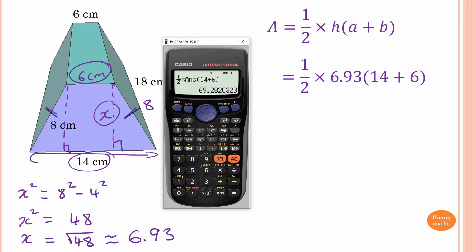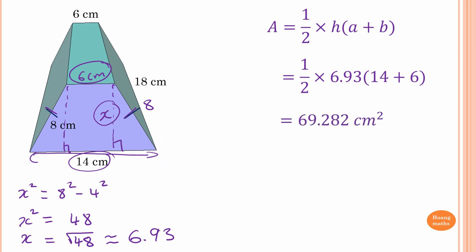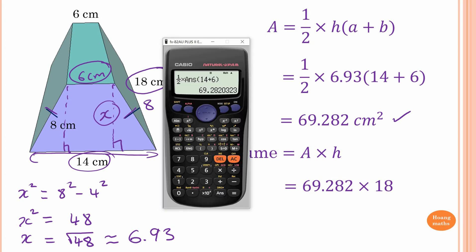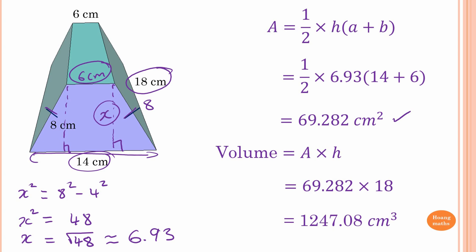So the area is 69.282 square centimeters. Volume of a solid is area times height. The height of this solid is 18. So 69.282 times 18 — using the exact answer from the calculator — equals 1,247.08. That's the volume of this trapezoidal prism.